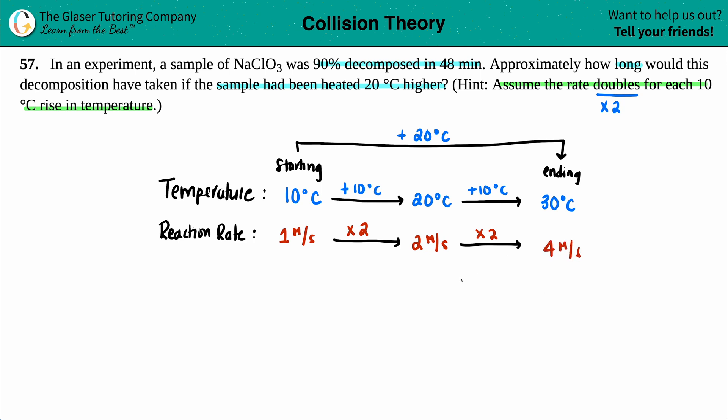So now from this information, from where we started to where we ended, we can gain information as to how fast that reaction is going to take. The ending rate was four molarity per second and our initial rate was one. So if I take my ending, four molarity per second, and I divide it by one molarity per second, four divided by one is four.